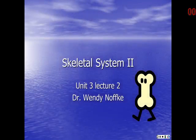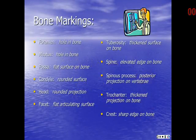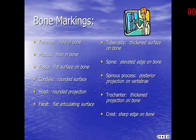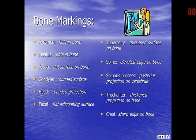This is a continuation with the second lecture in the skeletal system. Any bump and groove on a bone has a name, and many of the names have similar meanings. Both the foramen and a meatus mean a hole in bones, such as the foramen magnum in the skull and the external auditory meatus in the ear. A fossa is a flat surface on bone, such as the iliac fossa on the pelvis. A condyle is a rounded surface, such as the occipital condyle. A head is a rounded projection, like on the femur head.